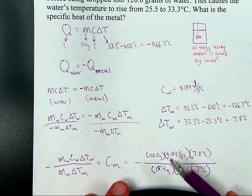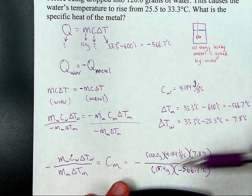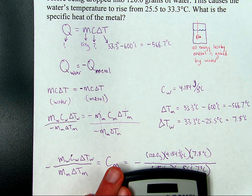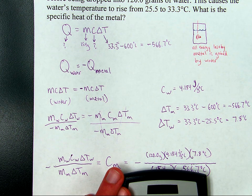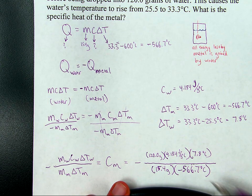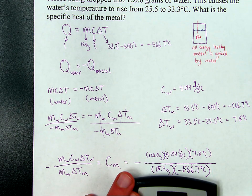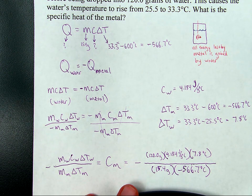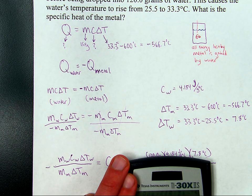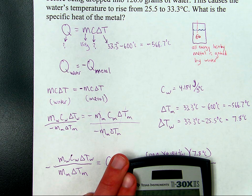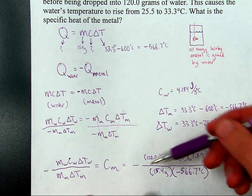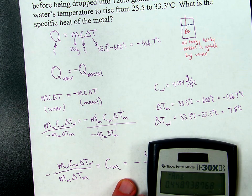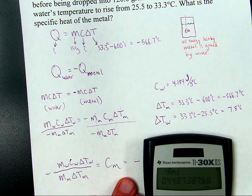So let's see what this comes out to. And to avoid errors from order of operations, I'm going to do this first and I'll do this one on bottom second. So 120 times 4.184 times 7.8 equals that, divided by, and in parentheses to avoid errors, 15.4 times negative 566.7. And that's the number. And then of course, there's this negative sign in front of everything. So let's do negative sign of everything. That's the final answer, a positive answer.